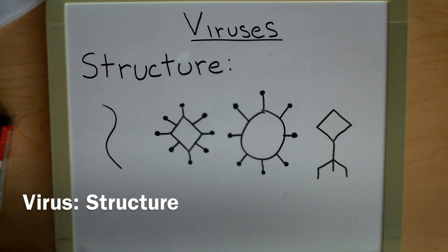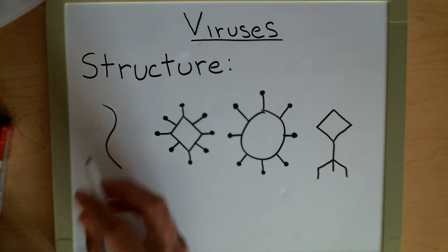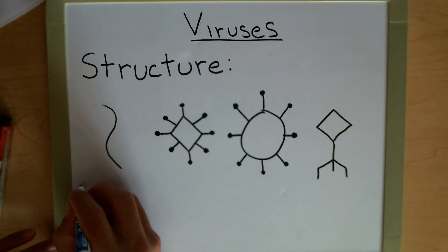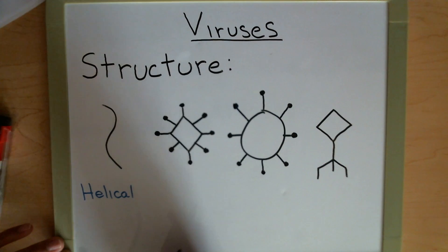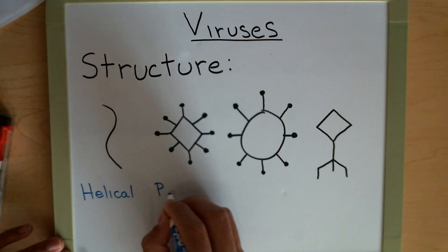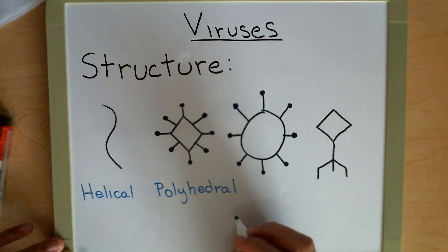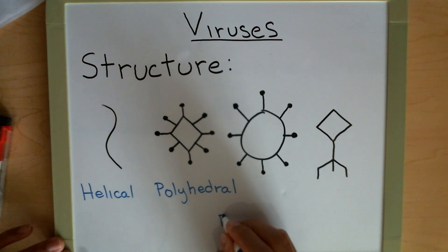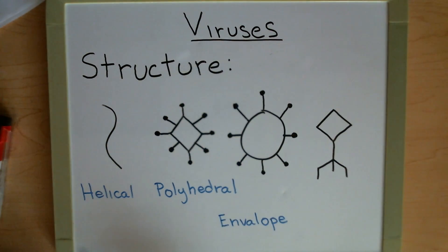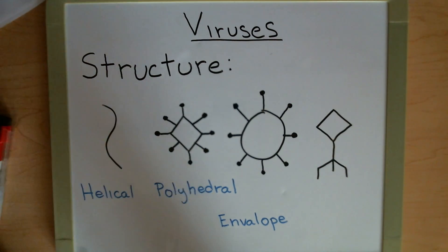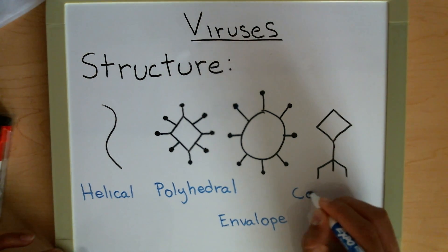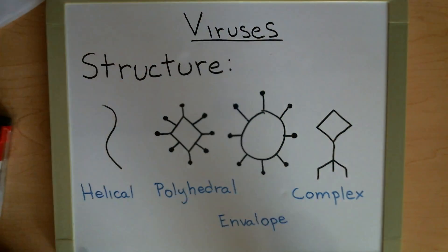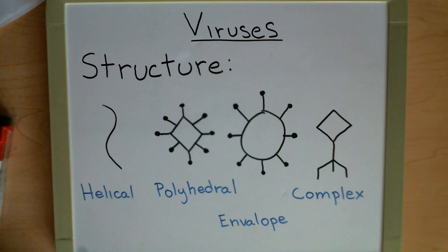Lastly, we're going to take a look at the structures important for your class. This first one — this little squiggly line — is what we call helical. This diamond-looking one with spikes coming out of it is called polyhedral. The circular one with spikes is an envelope — and remember, not all viruses have an envelope, but what is the importance of an envelope when they do have one? This last one is considered to be complex, and is a typical virus form that we see depicted in pictures all the time.